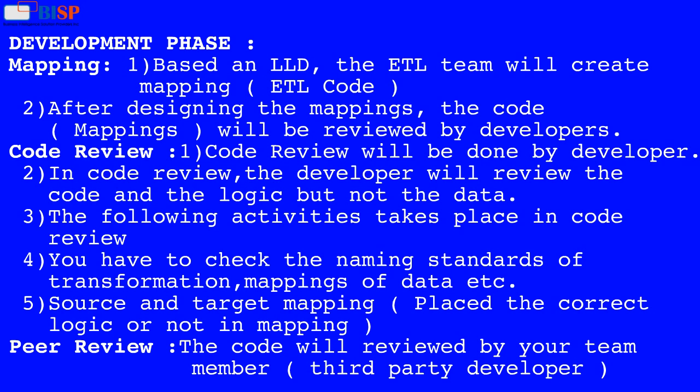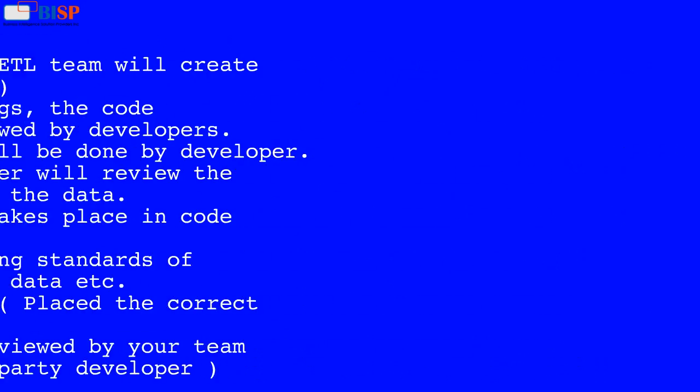Additional code review checks include source and target mapping and verifying whether correct logic is placed in the mapping. Peer Review: the code will be reviewed by your team member or a third-party developer.